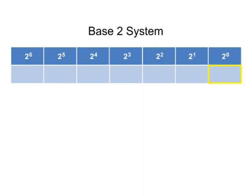Starting with position 1, we have 2 to the 0 power, or 1. Position 2 is 2 to the 1st power, or 2. Position 3 is 2 to the 2nd power, or 4, and so on.